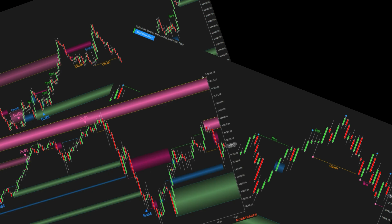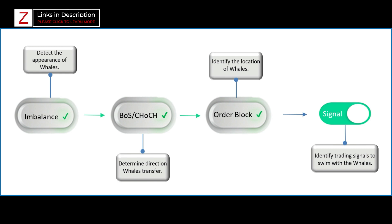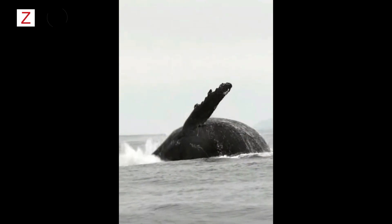In this video, I'll introduce you to Boss Order Block, an indicator based on price action analysis that will help you detect the trails left by these whales. Let's look at the flowchart outlining the steps to identify an order block: first, identify imbalance to detect the presence of whales; second, BOS and CHoCH are used to identify the direction of whale movement; third, identify the order block — the area where whales concentrate their trading.